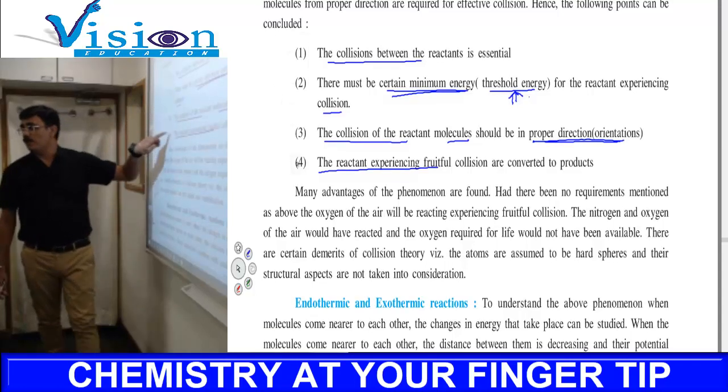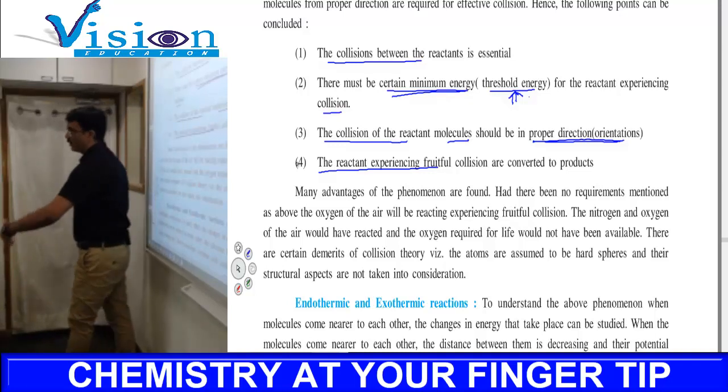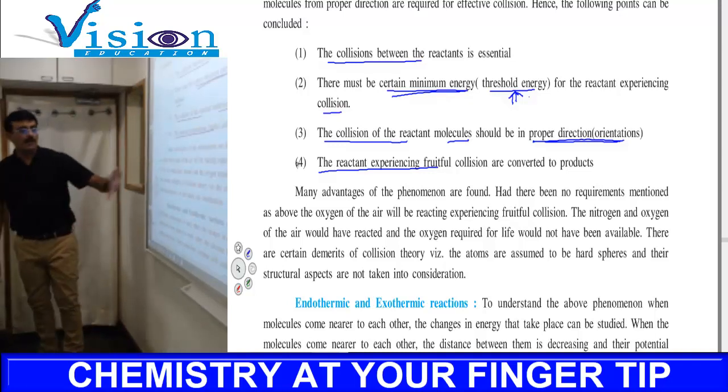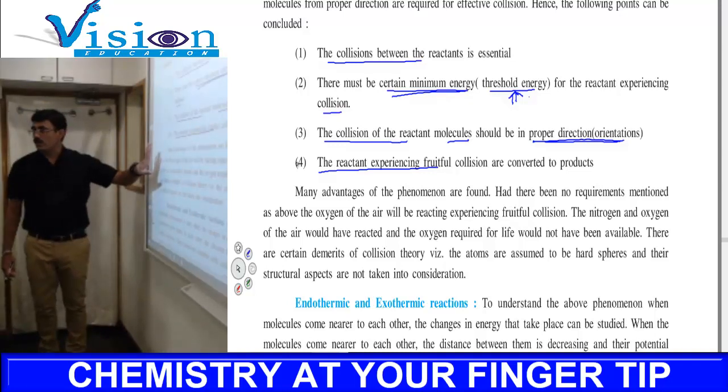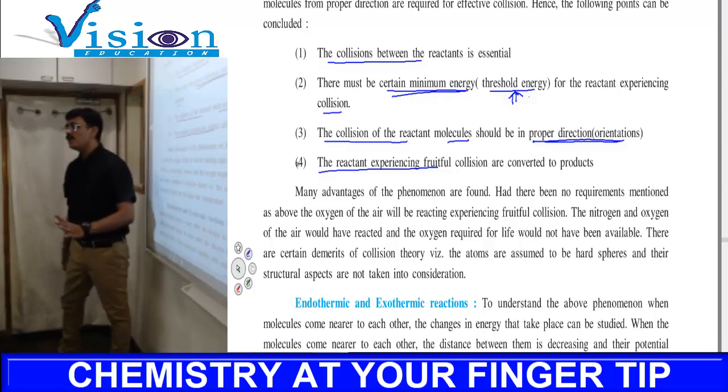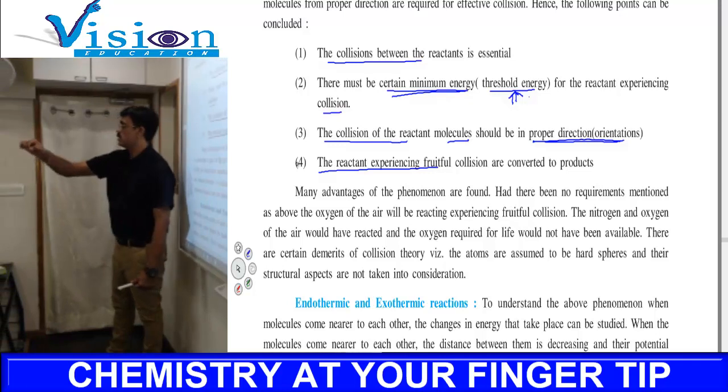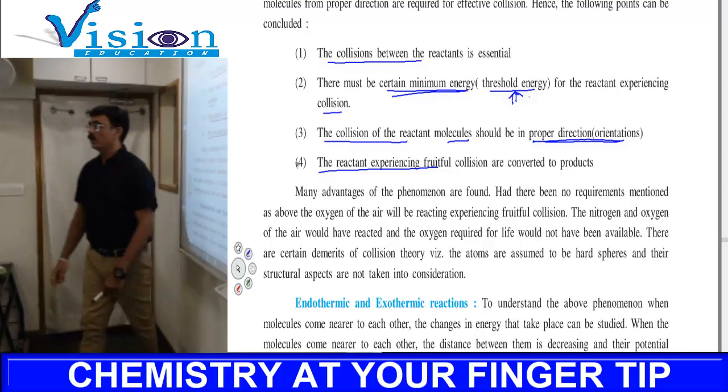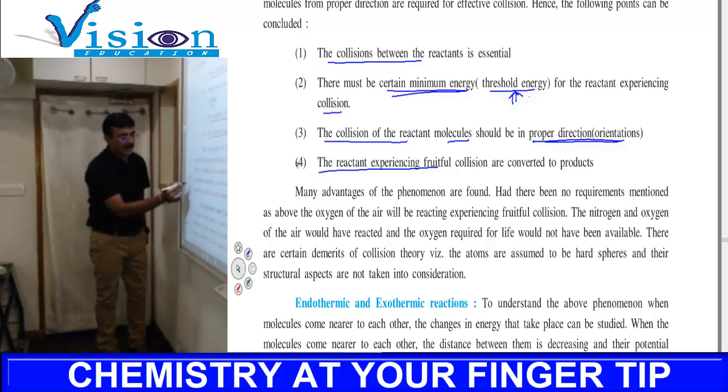If it attacks directly from the opposite direction, the product is obtained. Otherwise, no product is obtained. This is the effective collision parameter. Another parameter is called steric factor or probability factor, which we need to introduce. Our collision theory equation changes to: rate = p * Z_AB * e^(-Ea/RT), where p is probability factor.